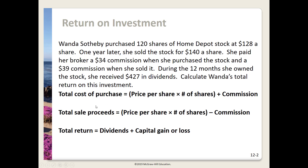There are several formulas we'll be using. First we need to figure out her total cost of purchase. We're going to take the price per share at which she bought the stock, multiply it by how many shares she has, and add in the commission. So we'll take $128 times 120 shares and add the $34. This will be the total cost of her buying stock, and we get $15,394.